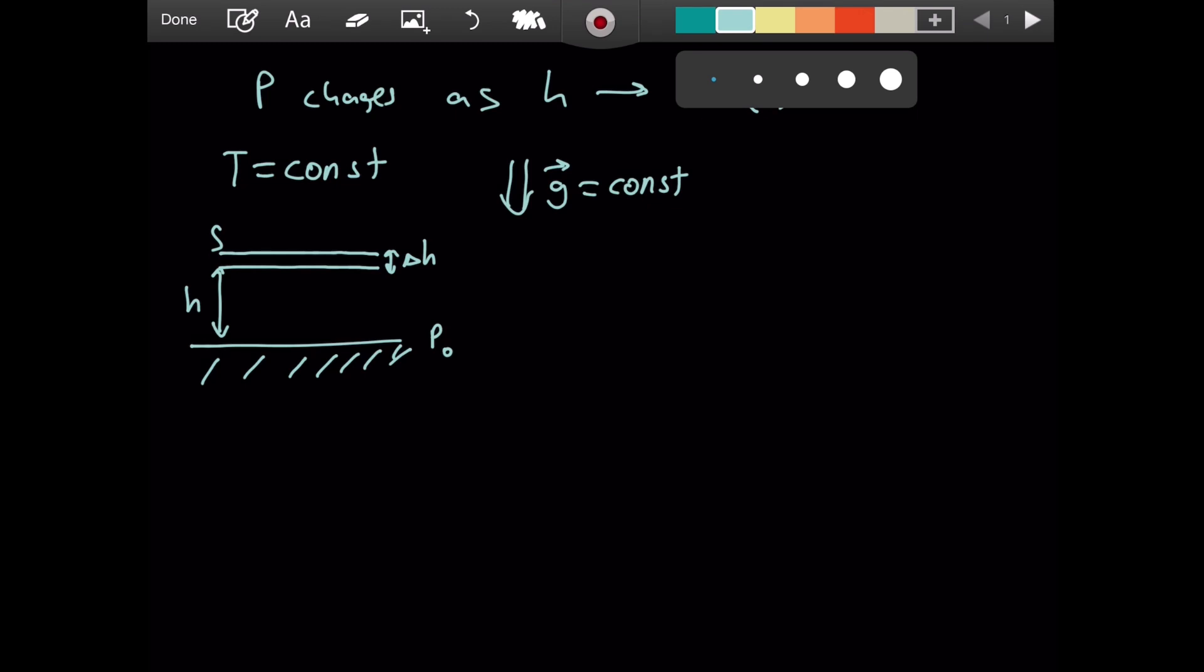There will be a pressure P pressing up, and another pressure P plus delta P. This P plus delta P is the pressure exerted on the top layer, and P is the pressure exerted on the bottom layer.